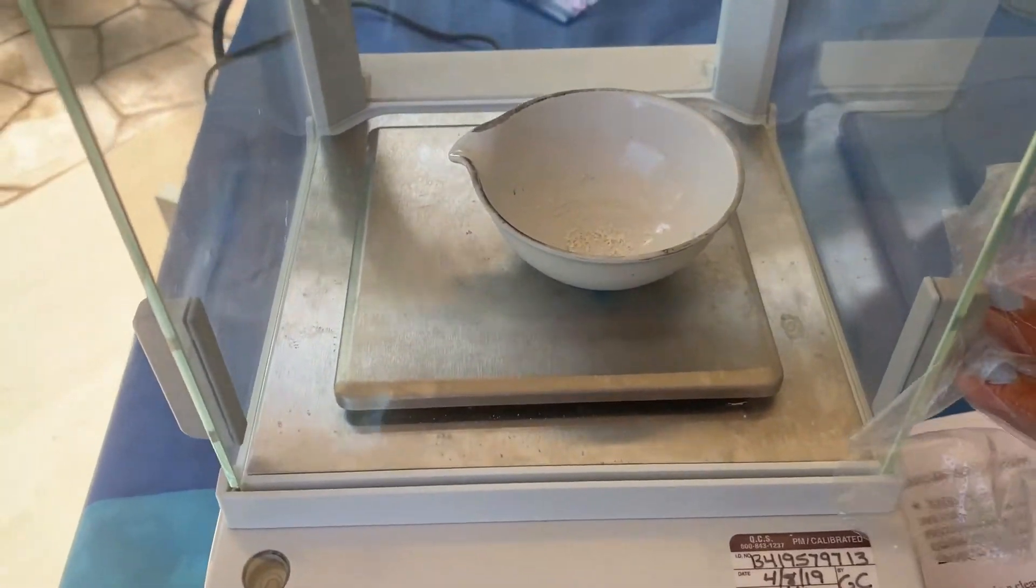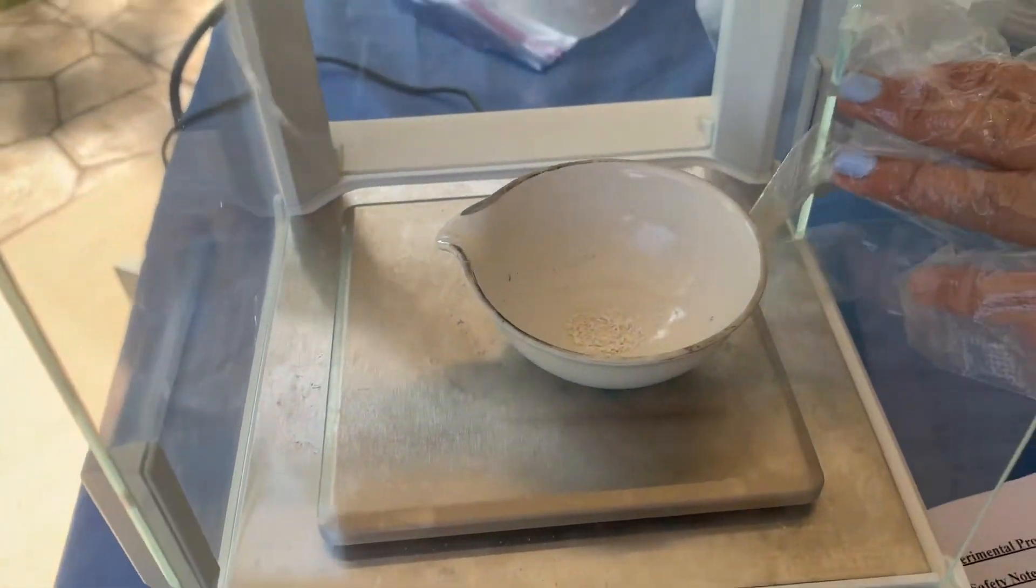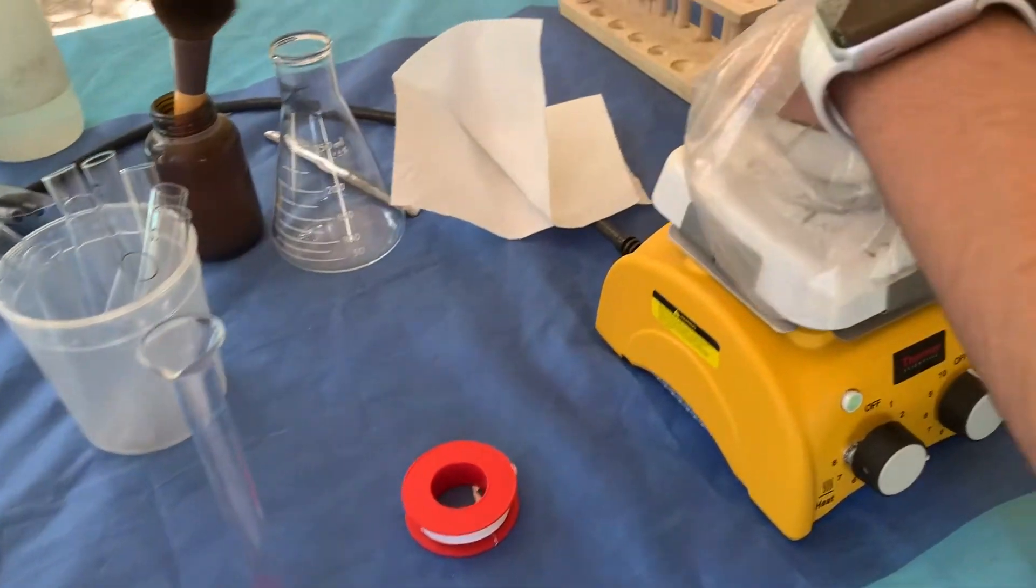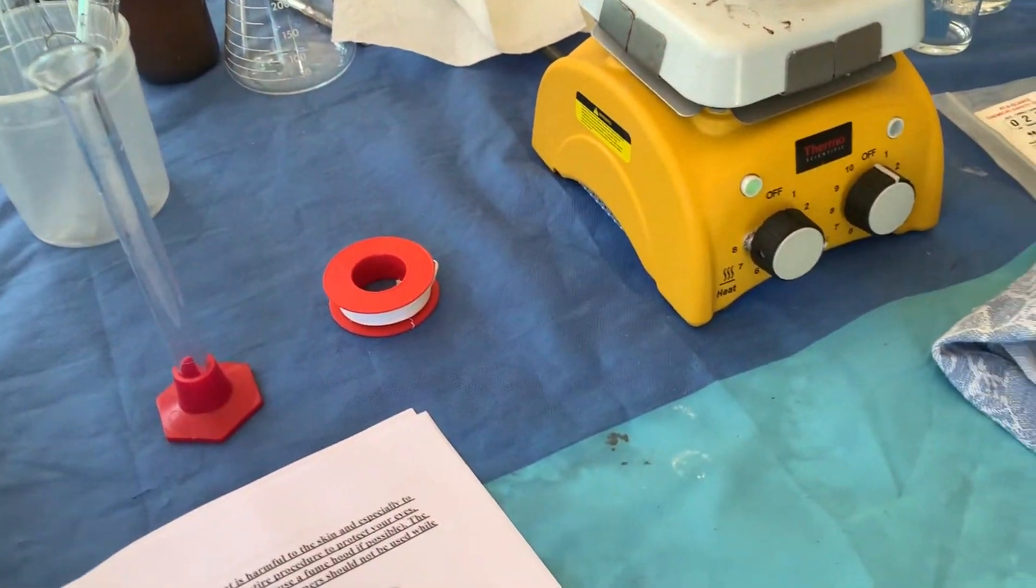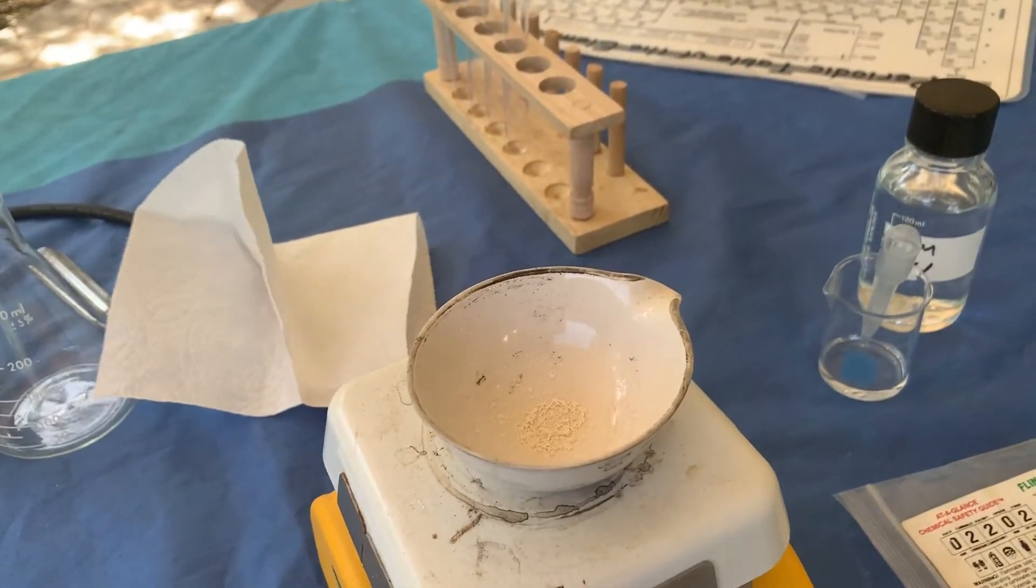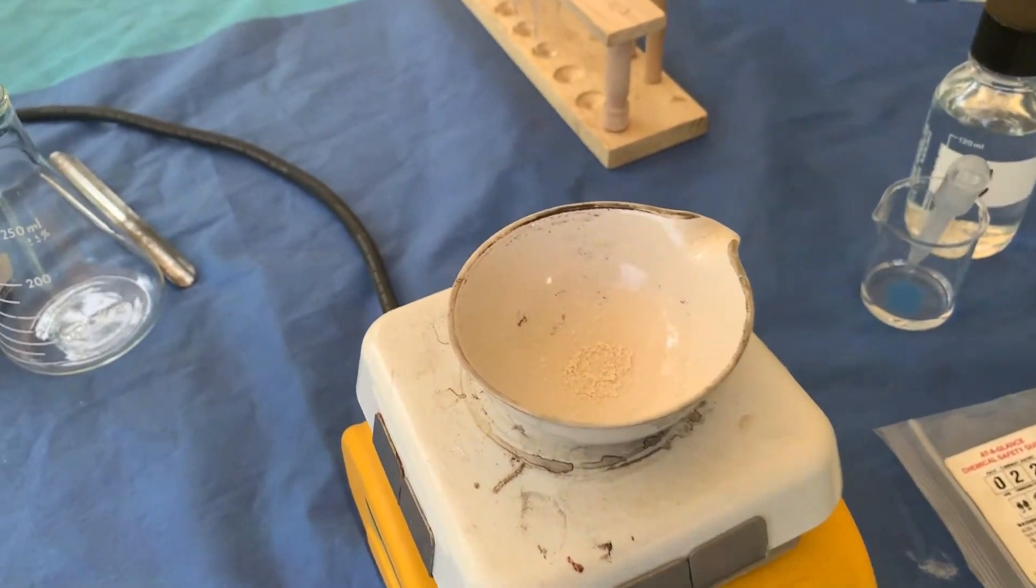So now we're going to take the evaporating dish and put it back on the hot plate for 10 minutes. And we're going to wait 10 minutes while this sits here.